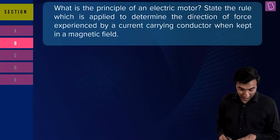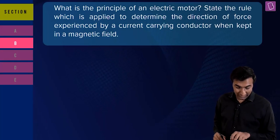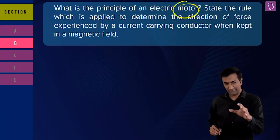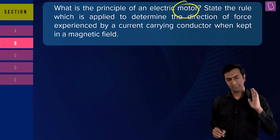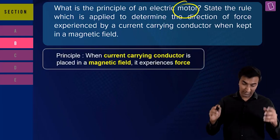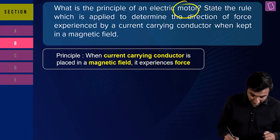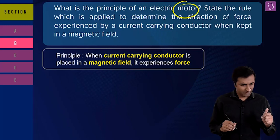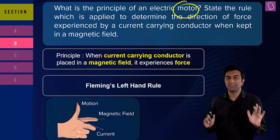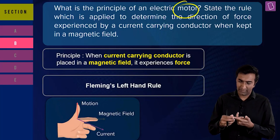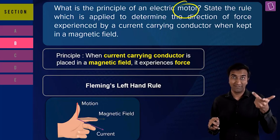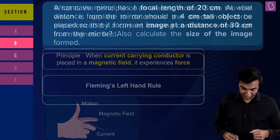Next question from Section B: 'What is the principle of an electric motor? State the rule which is applied to determine the direction of force experienced by a current-carrying conductor in a magnetic field.' For a motor: current passing through a conductor in a magnetic field produces motion — use Fleming's left-hand rule. The index finger is magnetic field, the middle finger is current, and the thumb is the direction of motion. Use your own left hand to figure this out.